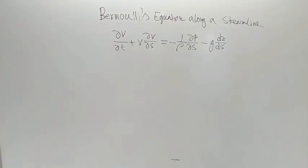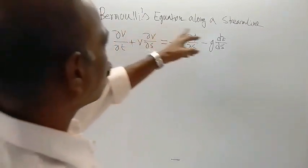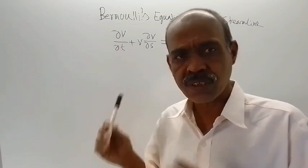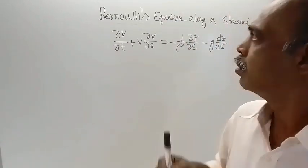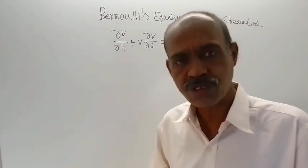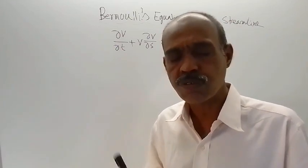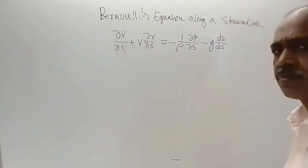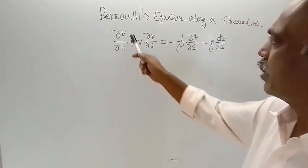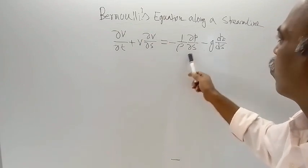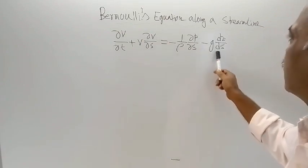Good morning. Today's topic is Bernoulli's equation along a streamline. Previous to this video, Euler's equation of motion along a streamline was derived, and this was the equation: del V del T plus V del V del S is equal to minus 1 by rho del P del S minus G dz ds.